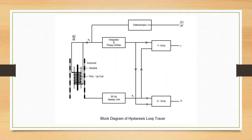An AC current is supplied to the solenoid. The signals E1 and E2 are mentioned in the diagram. An integrator and phase shifter are present, and a differentiator is also there to determine the values. The signals will be collected in the X amplifier, and finally it will give the values of J and H.